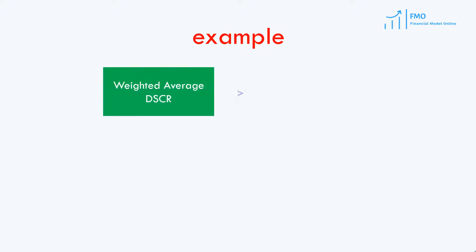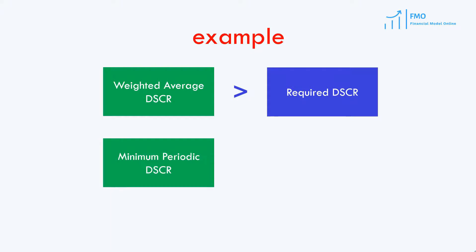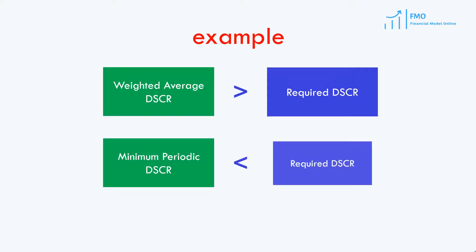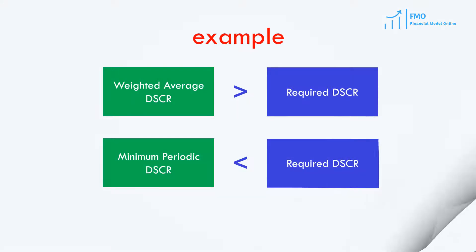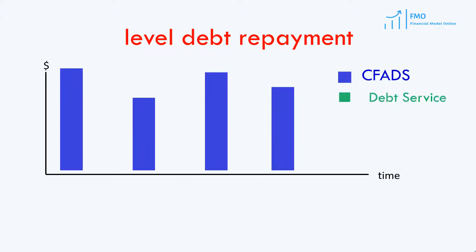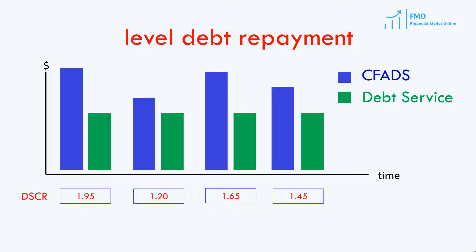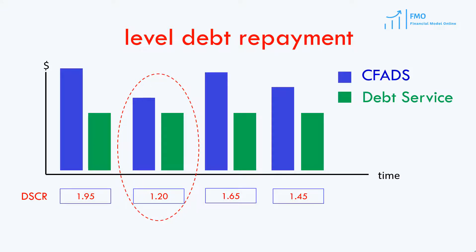We have seen in our model that while the weighted average DSCR generated by the project may be larger than the minimum required DSCR, the periodic DSCR in some periods may be lower than the minimum required DSCR. In other words, the total project's cash flow may be more than enough to repay the debt. However, due to unusual one-off payments, such as a major overhaul of the project in some periods, the periodic DSCR may be lower than the minimum required DSCR in those periods.